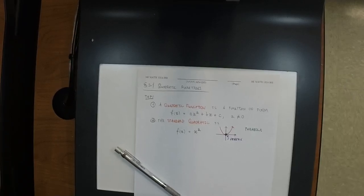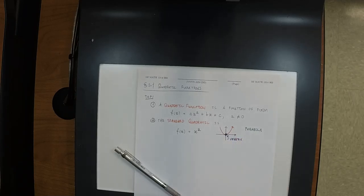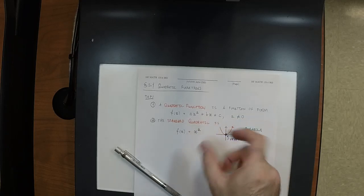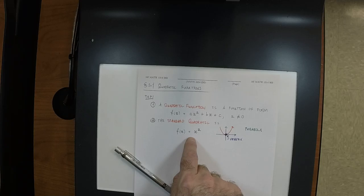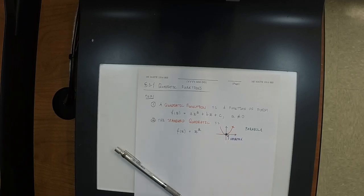Most of this section will be done by the following: we learned in previous lectures how to transform functions — how to move them around, reflect them. So for most of the section, we're going to say: here's the standard quadratic; what if we transform it? Where did the vertex go? That's the question every time.